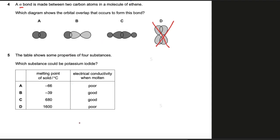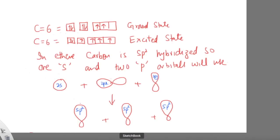If you work out the electronic configuration of carbon you will get the answer very easily. Carbon has six electrons: in the first shell 1s2, then 2s2 and 2p2 — this is the electronic configuration in the ground state. In the excited state an electron jumps from 2s to 2py.